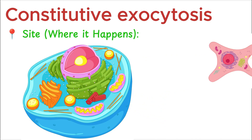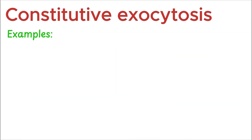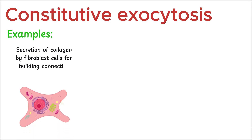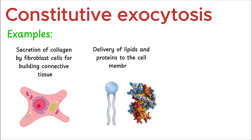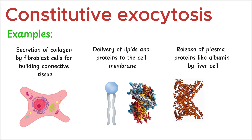Examples of constitutive exocytosis include the secretion of collagen by fibroblast cells for building connective tissue, delivery of lipids and proteins to the cell membrane, and release of plasma proteins like albumin by liver cells.